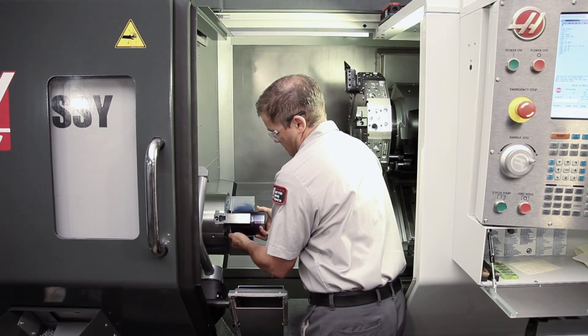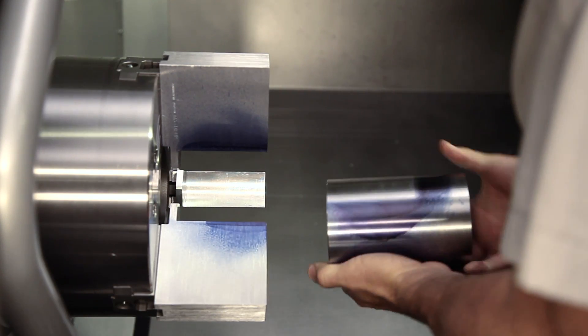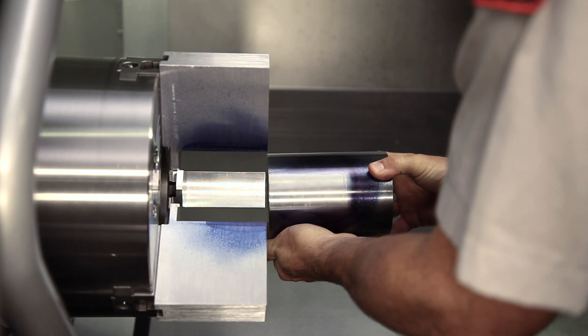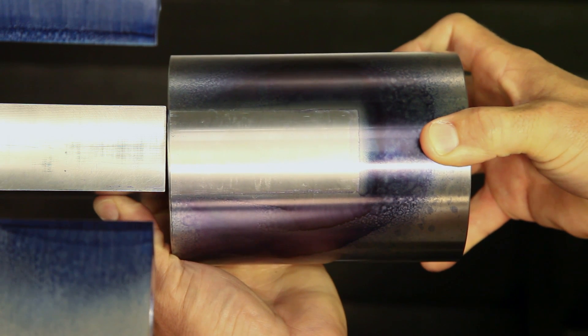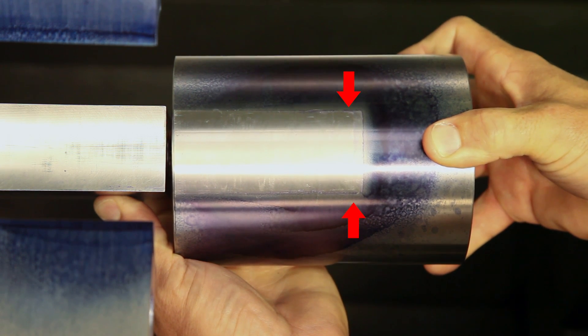After allowing the bluing to dry, Andrew unclamps the jaws and finds that very little of the compound has seeped in between the jaws and the workpiece, not even where the jaw tips contact the workpiece. This indicates the jaws are gripping along their entire length.